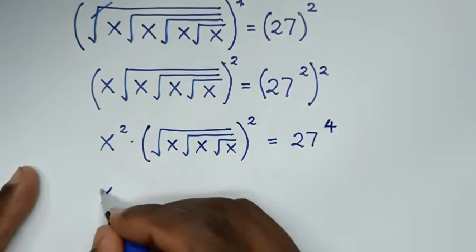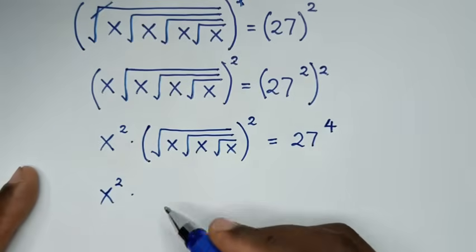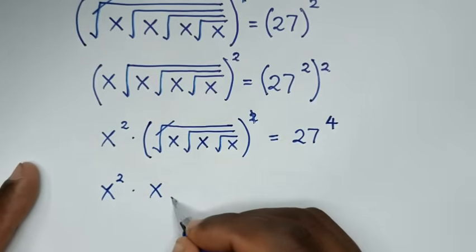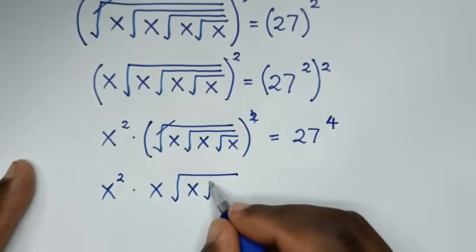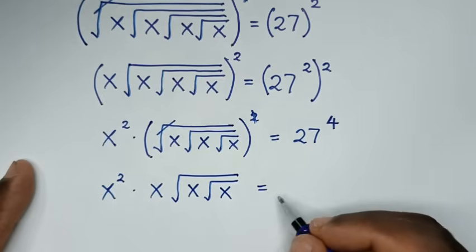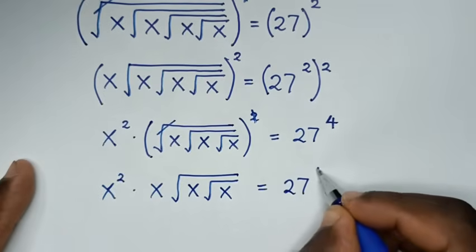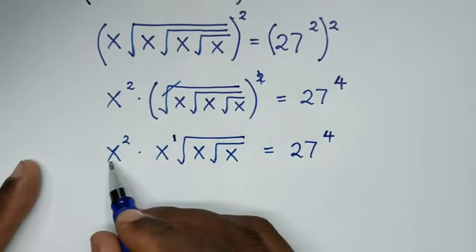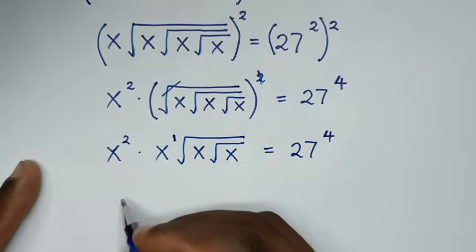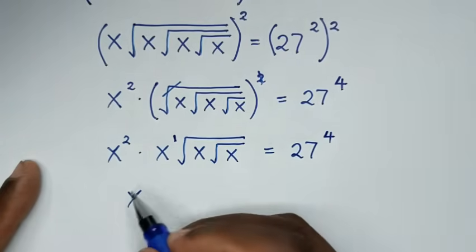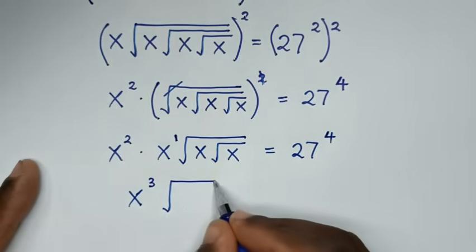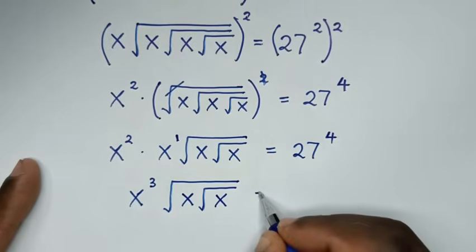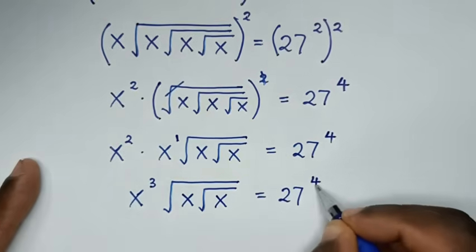Then it will be x squared times — here, this square root of x under square root of x — so it will be times x times square root of x. Square root of x is equal to 27 to the power of 4. Then this x here is the same as x to the power of 1, so x power of 2 times x power of 1 is x to the power of 2 plus 1, which is power of 3. Then square root of x under square root of x is equal to 27 to the power of 4.